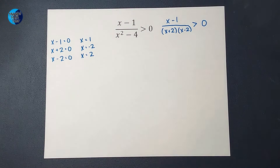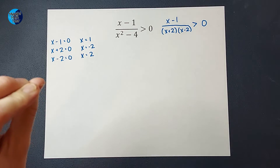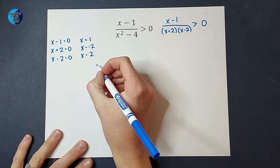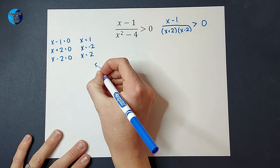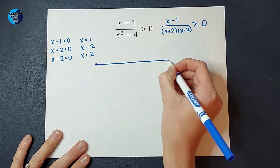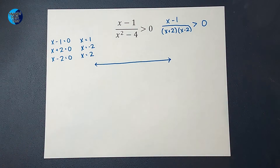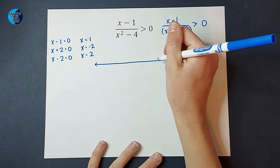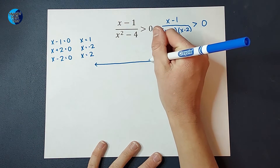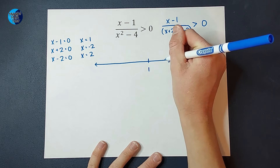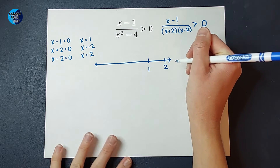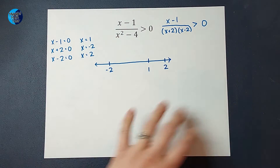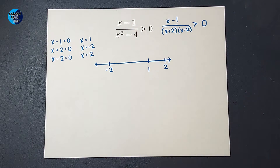Next, I want to represent each of these on a number line. Here is my number line. I want to represent each of these numbers, so I would have one approximately here, two here, and negative two about here. It doesn't have to be perfectly spaced — this is just a visual representation for us.